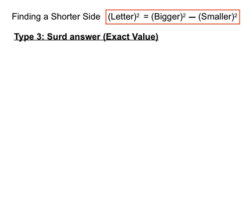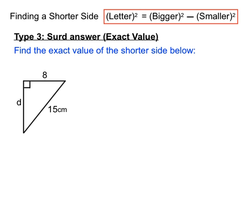Now just like in the previous video when we're finding the hypotenuse, sometimes they ask us to leave our answer in surd form, or the way they say that in the question is we're asked to find the exact value of the shorter side. So once again, it doesn't change our arrangement, it just really changes how we leave our answer.